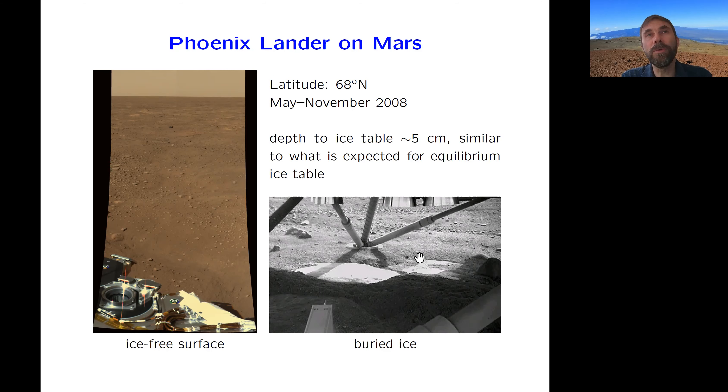And what this leads to is this concept that the humidity of the atmosphere can balance the humidity of the ice table, even if there is no ice on the surface. So here is a photo by the Phoenix lander on Mars. And there is no ice whatsoever on the surface, but just at five centimeter depth, there is a permanent ice table. And this ice, we think, is in equilibrium with the vapor in the atmosphere. It's not retreating or anything, it's in equilibrium.